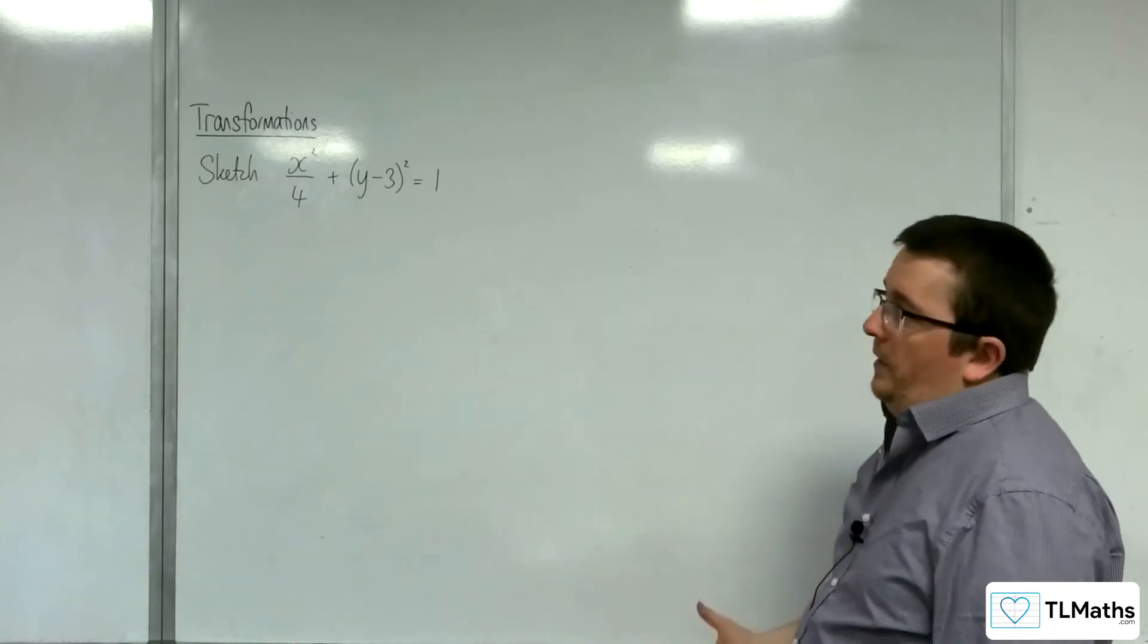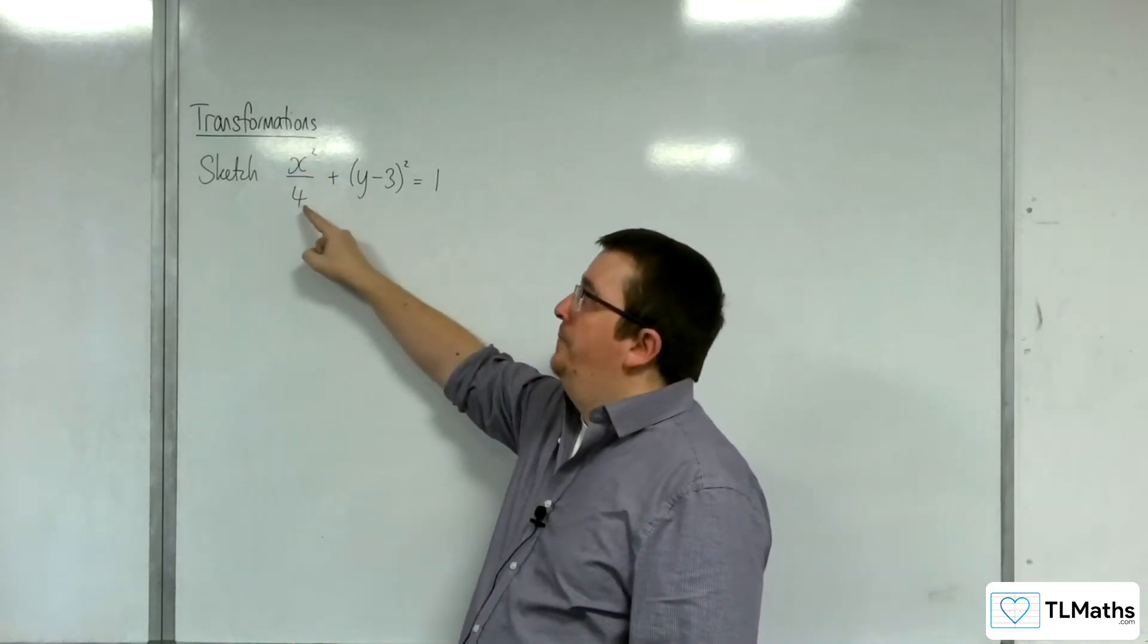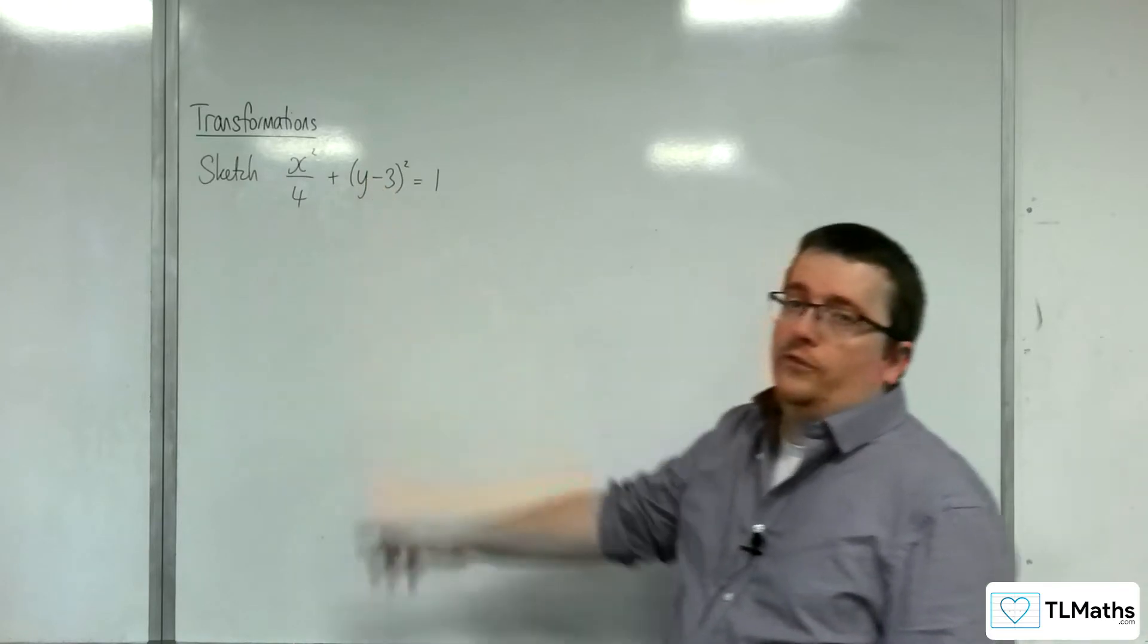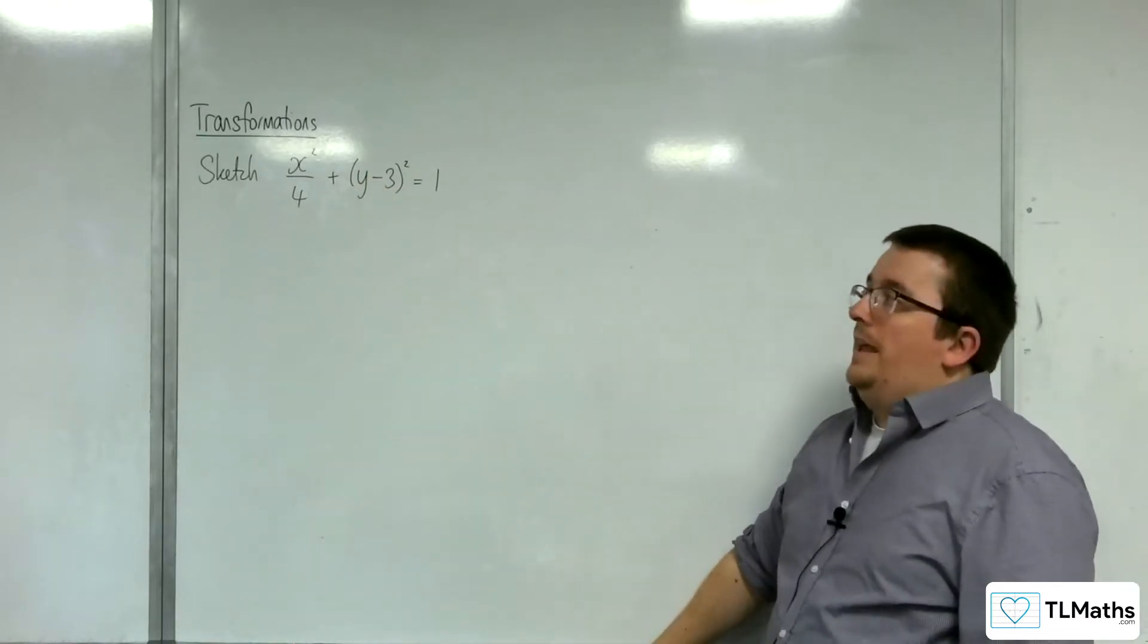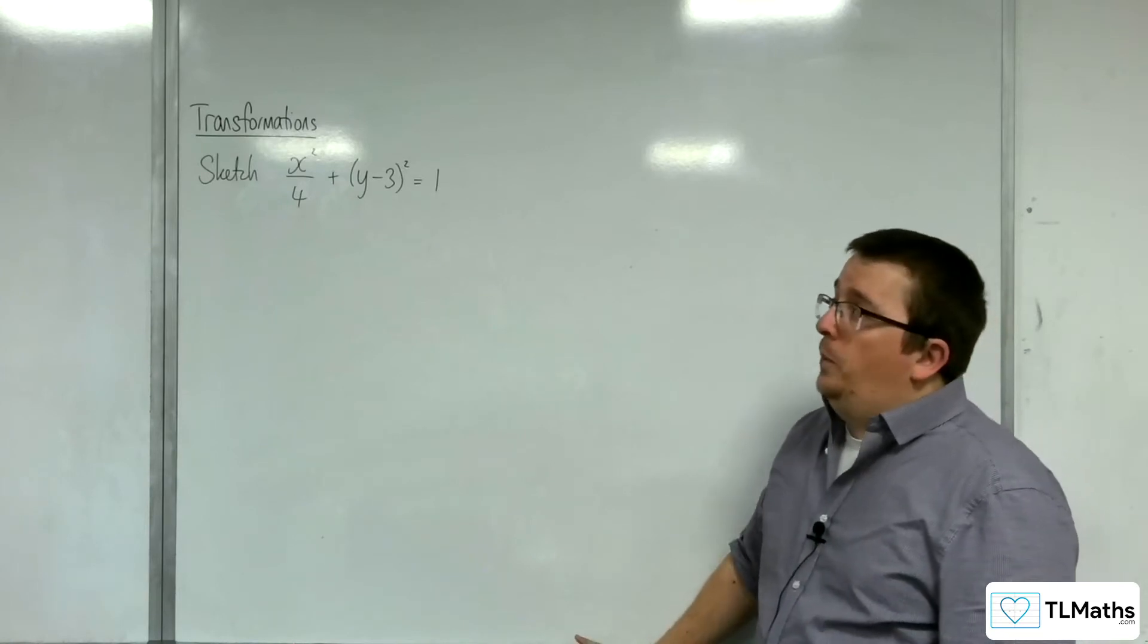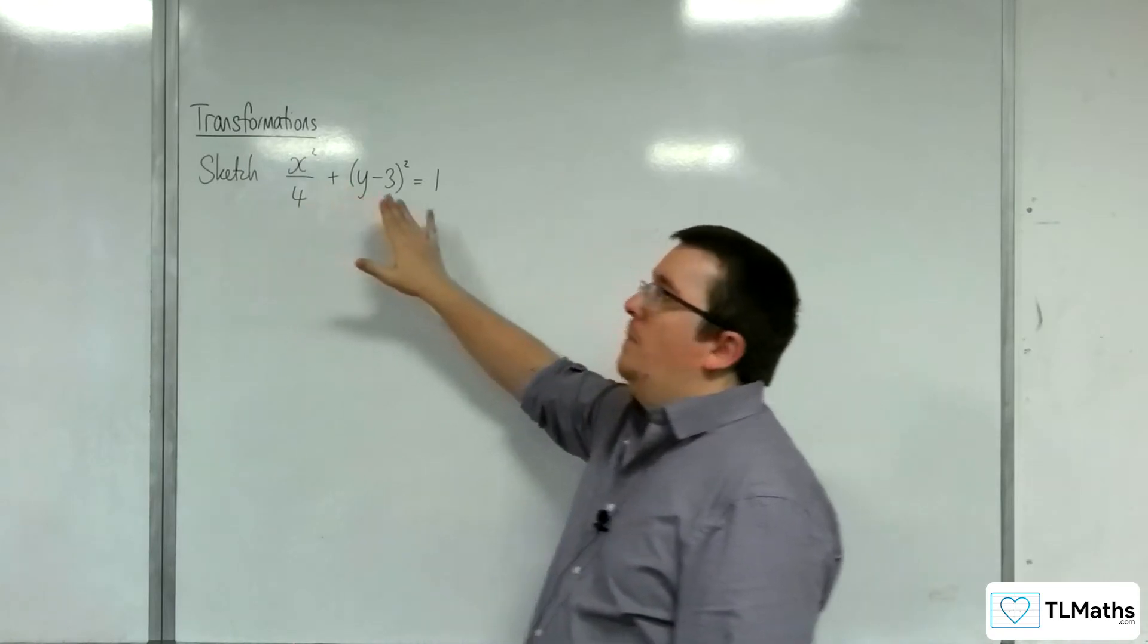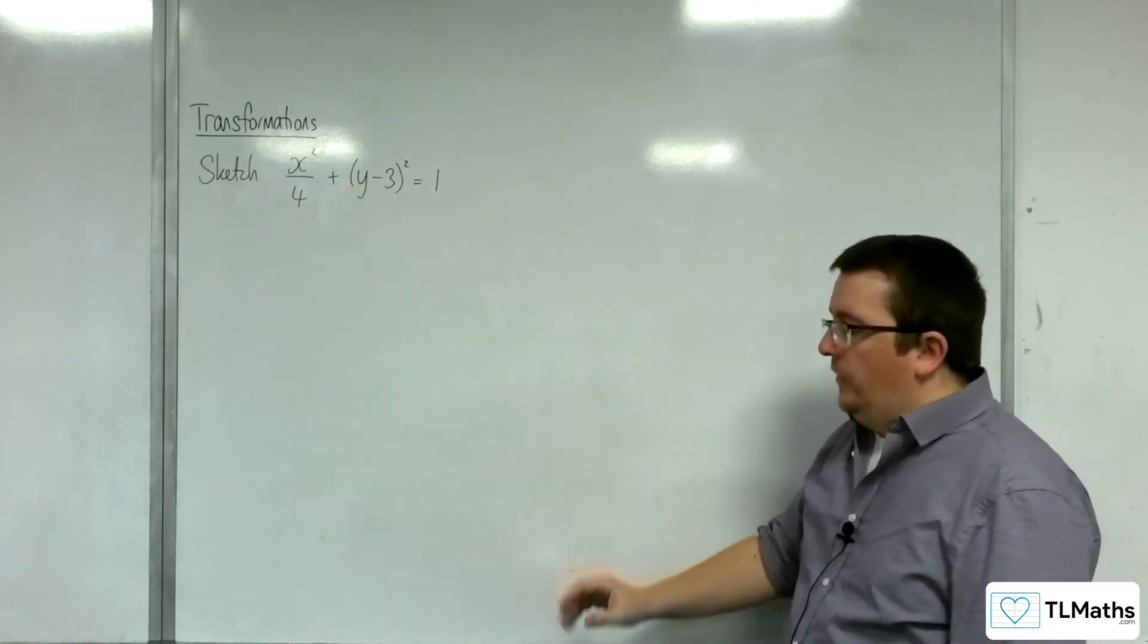Is it a parabola? Well, no, because we've got an x squared here and a y squared. So it's not a parabola. Is it a hyperbola? No, because we don't have x squared take away y squared. We've got x squared plus y squared. So that means there's got to be an ellipse.